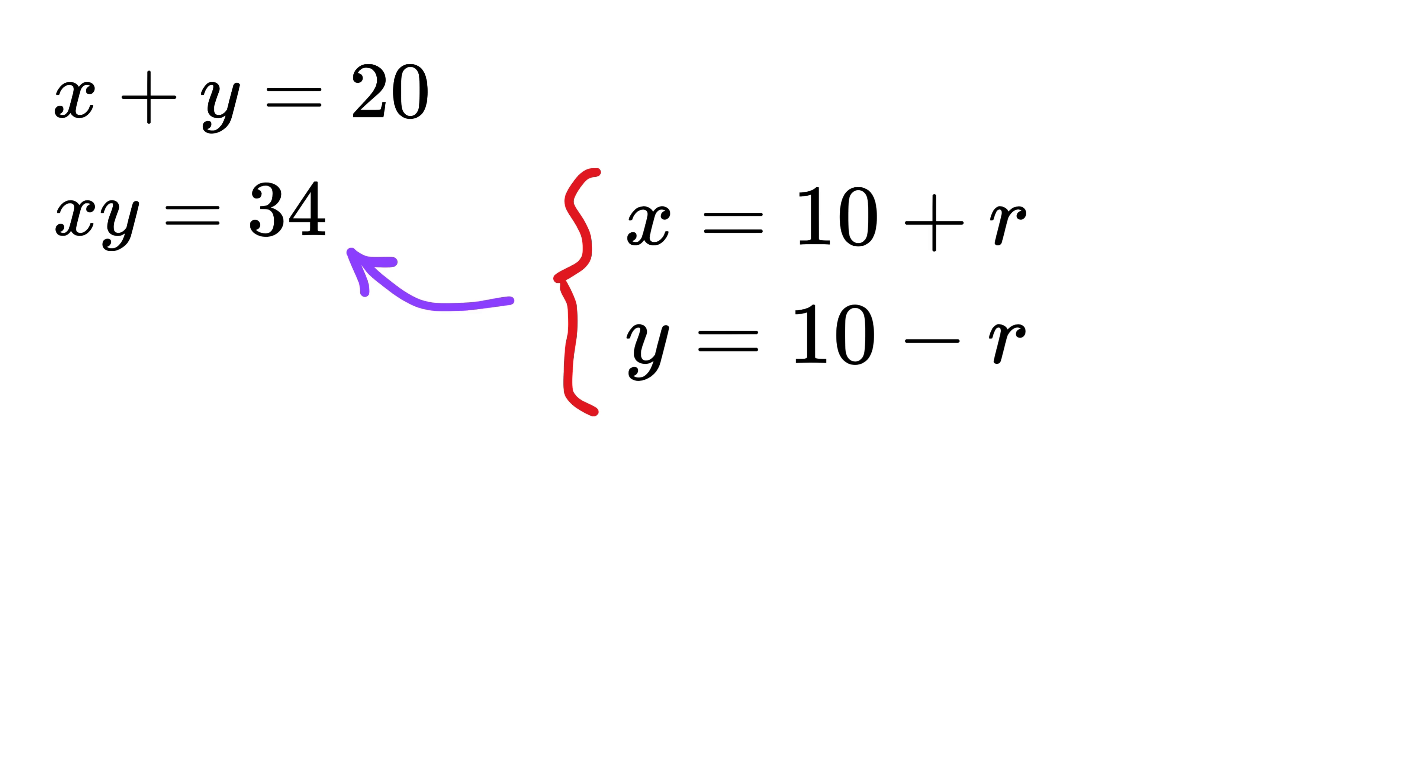Now simply put x and y into the product formula to get (10 + r)(10 - r) = 34. Using the standard identity (a + b)(a - b) = a² - b², this becomes 10² - r², which is 100 - r², and this equals 34.